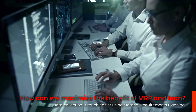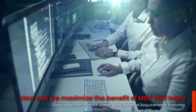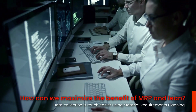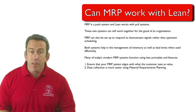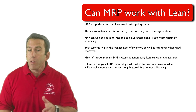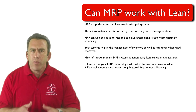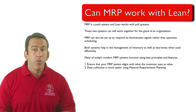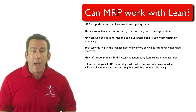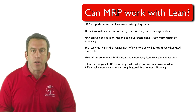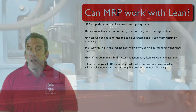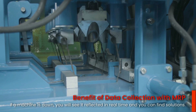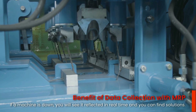Another important element with MRP is that data collection is much easier using MRP. MRP can collect data from SKUs and quickly load the data for review. With this data, you can monitor work in progress, scrap levels, lead times, and even the capacity that is being placed on your organization. If a machine is down, you will still see it reflected in real time, and you can find solutions.